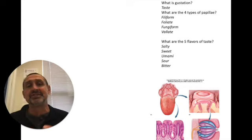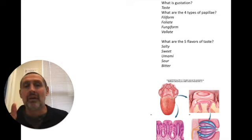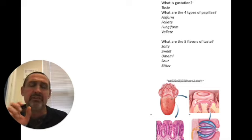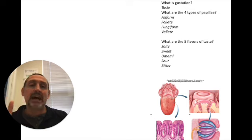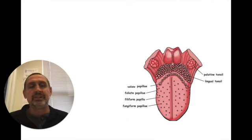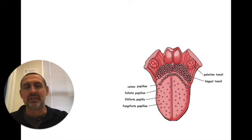So these are chemicals, the salty taste or sweet. Umami has to do with a beefy kind of meaty flavor. Savory, sour, and bitter. So here's a picture of your tongue and you can see these raised projections and what they look like and how they're a little bit different from each other.